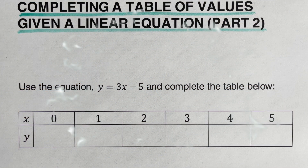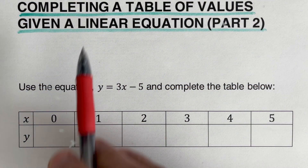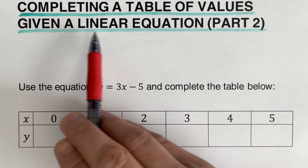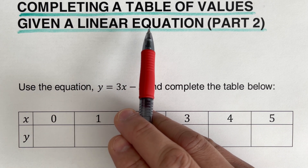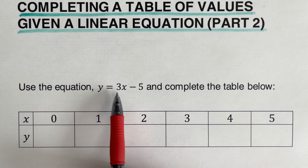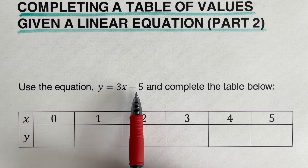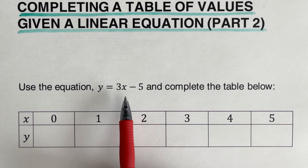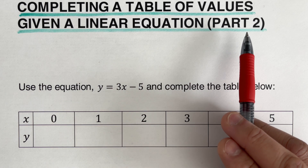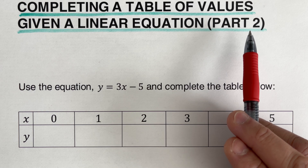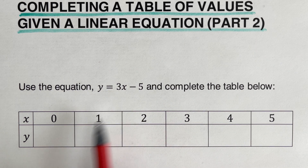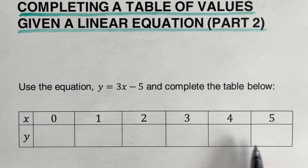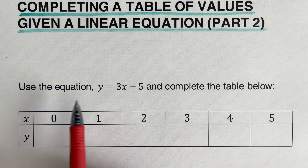Hello everyone. In this video we will be completing a table of values given a linear equation. The linear equation we have here is in the form y equals mx plus b, or slope-intercept form. This is the second part, where we are going to use the slope and the y-intercept to complete the table.